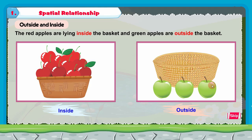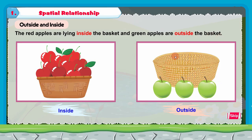The red apples are inside the basket and the green apples are outside the basket. Let us read the sentence: the red apples are lying inside the basket. Yes, the red apples are inside the basket and the green apples are outside the basket. This is about inside and outside.